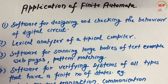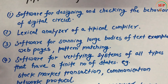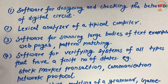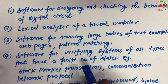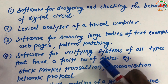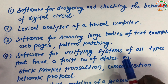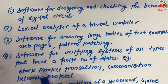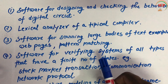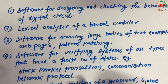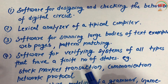The fourth point is software for verifying systems of all types that have a finite number of states. Examples include stock market transactions and communication network protocols. If I want to check which state I am in within a communication network protocol, I can use finite automata.